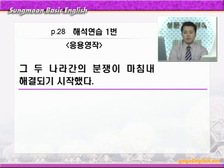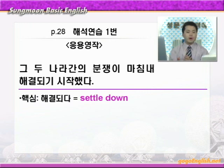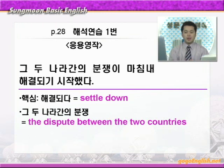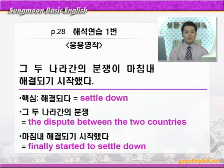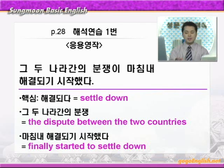문제를 보겠습니다. '그 두 나라 간의 분쟁이 마침내 해결되기 시작했다.' 핵심은 '해결되다'가 있으니 settle down을 쓰면 되겠죠. 분쟁은 dispute, 뭐뭐 사이에는 between, 그 두 나라는 the two countries. 그래서 the dispute between the two countries. 마침내는 finally, '뭐뭐 하기 시작하다'는 start to 부정사, 과거니까 finally started to settle down. 그래서 문장을 만들어보죠.